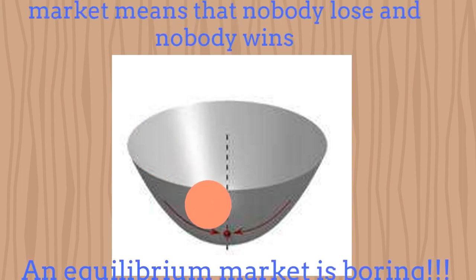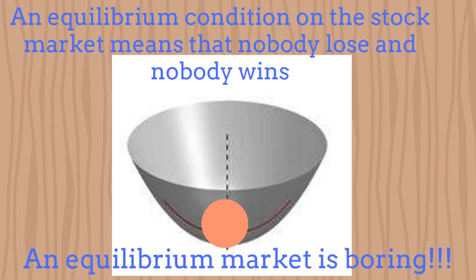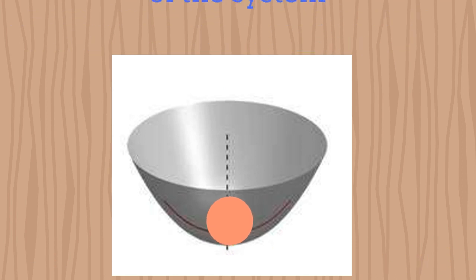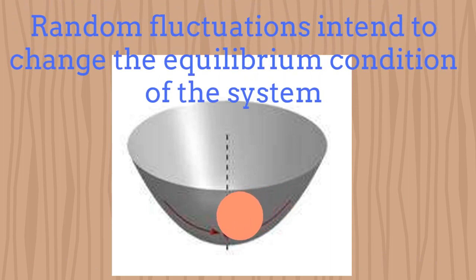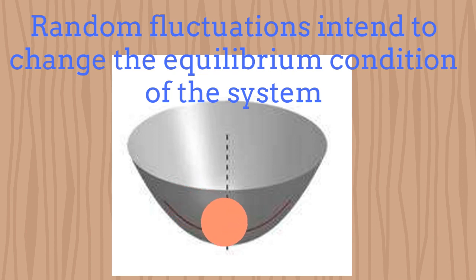The equilibrium condition in the stock market is called the martingale condition. As an example, consider the bottom of a potential — the bottom represents an equilibrium condition or martingale, with some specific price for an option. An equilibrium condition means that everybody has the same amount of information and nobody will win nor lose anything from the market. The stochastic nature of the variables forces the system to change quickly from equilibrium due to random fluctuations or random information entering or leaving the system.